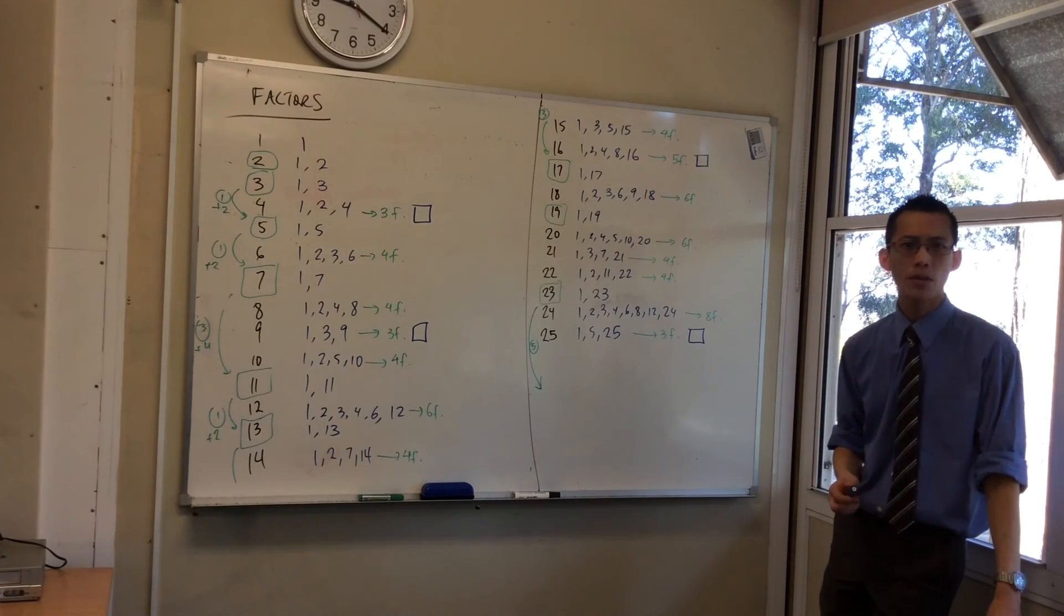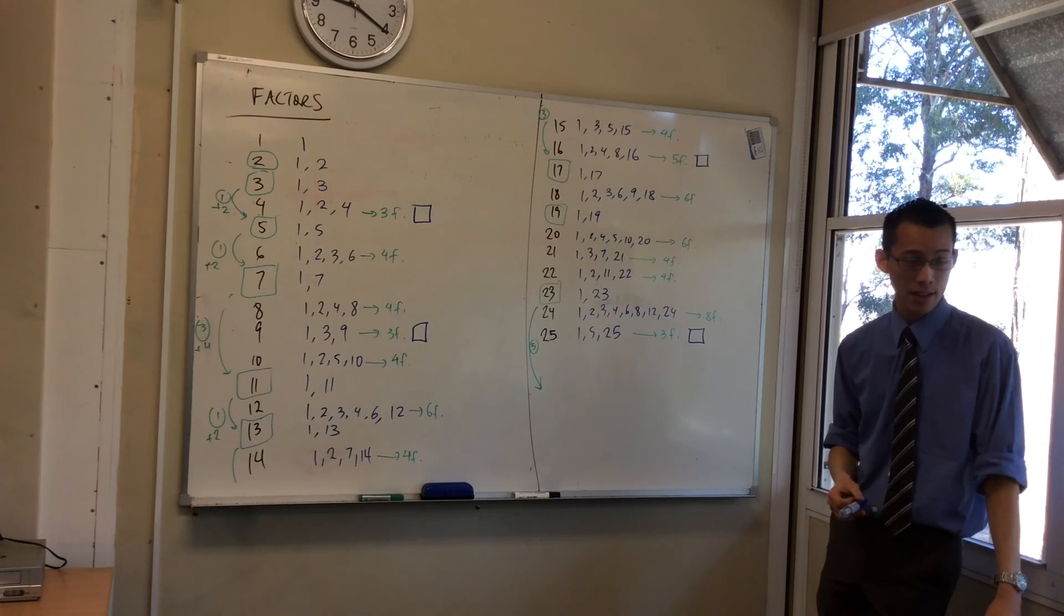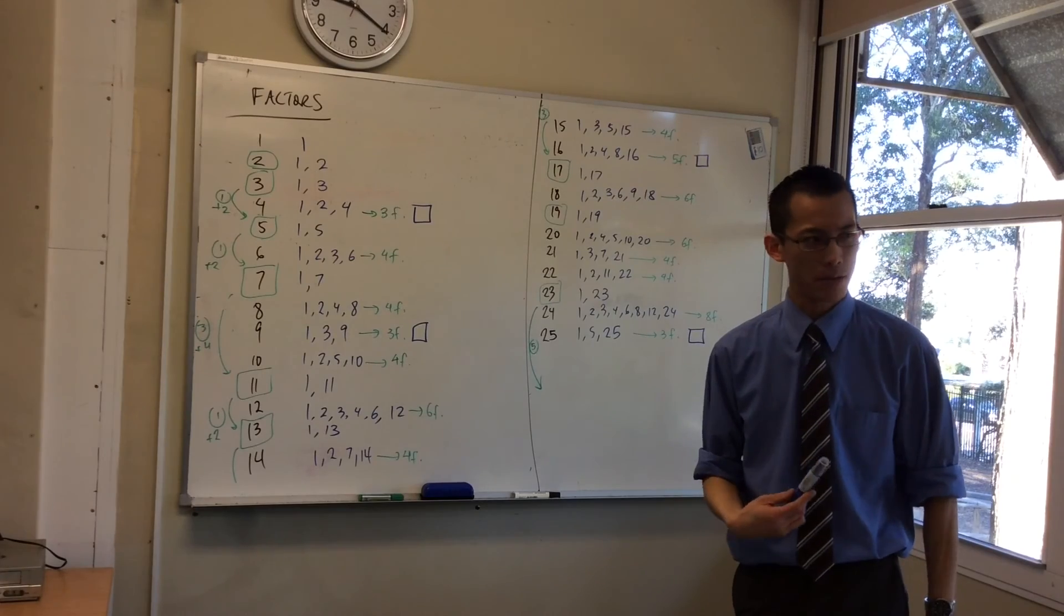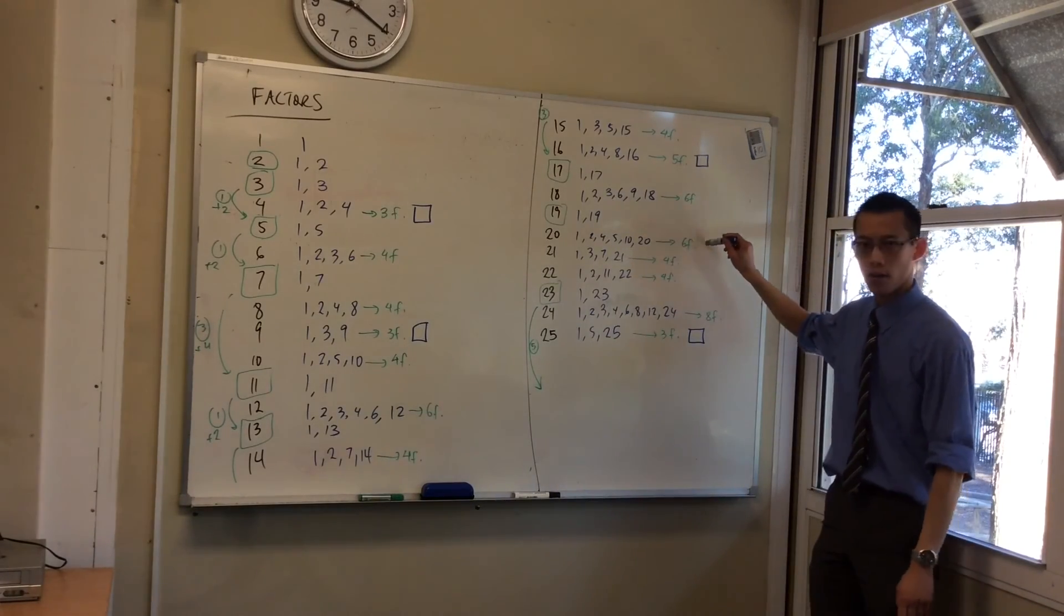That's kind of weird. What would that be? Why is it that the squares only have an odd number of factors, or maybe I should ask it the other way. Why do all those other numbers, why I always seem to end up with an even number of factors?